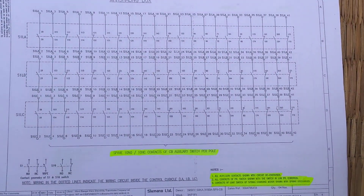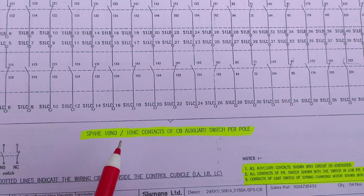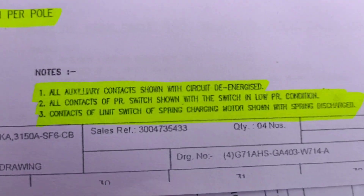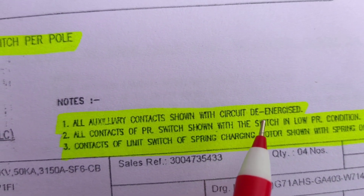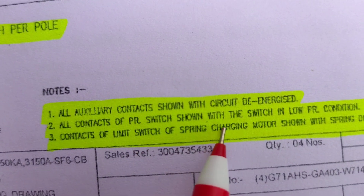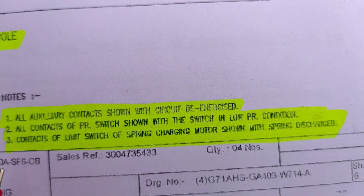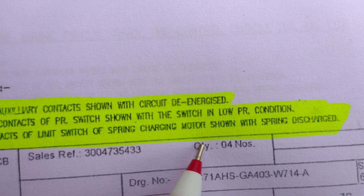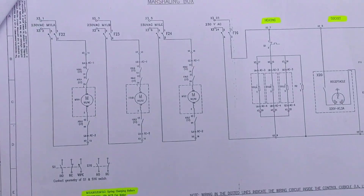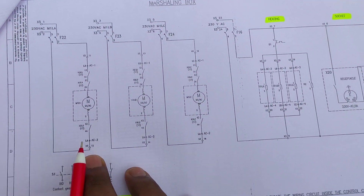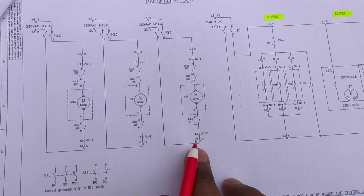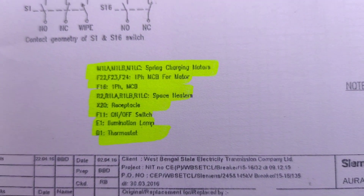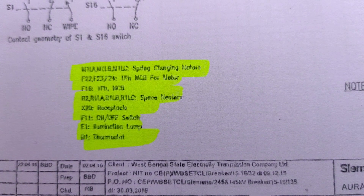These are the spare NO and NC contacts — 10 NO and 10 NC contacts for the circuit breaker auxiliary switch per pole. All auxiliary contacts are shown with the circuit de-energized. All contacts of the pressure switch are shown with the switch in low pressure condition. The contacts of the limit switch of the spring charging motor are shown with spring discharged condition. This is the motor circuit for the three individual poles — R pole, Y pole, and B pole. This is the illumination circuit and heating circuit inside the circuit breaker, with the contactors, MCBs, and connection points given accordingly.